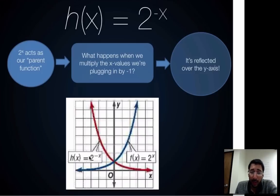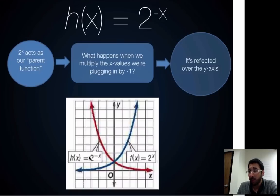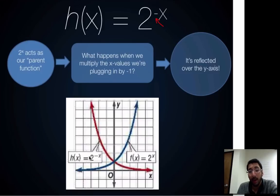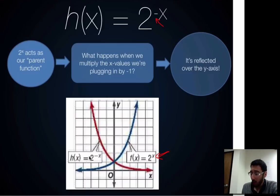Example two: h of x equals 2 to the negative x. The parent function is 2 to the x. We are multiplying directly by a negative number up in the exponent, next to the variable. Since it is within the parent function, that reflects it over the y-axis. You can clearly see in the image that the parent function 2 to the x was flipped over the y-axis.